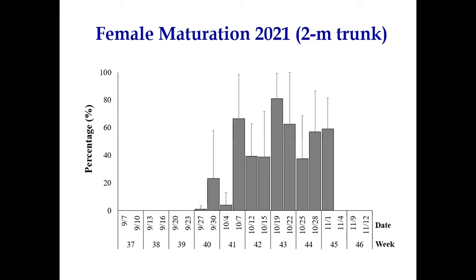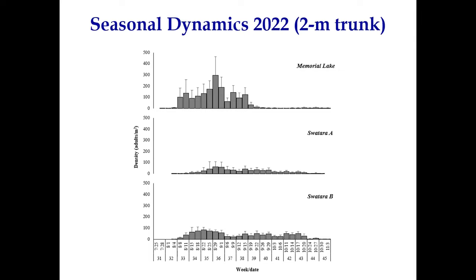Females' maturation results show that females matured by late September. In 2022, we expanded this to three sites — Memorial Lake and two sites in Swatara State Park. The population density at Memorial Lake is much higher than at the two Swatara sites. Another difference: at Memorial Lake, the population started to decline by mid-September, while the two Swatara populations basically maintained the same level since they were much lower in density.